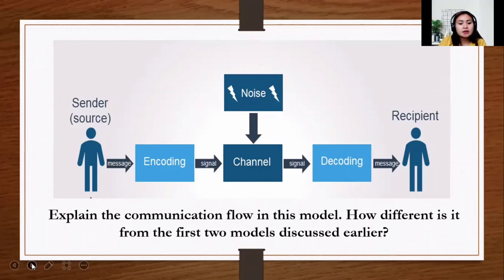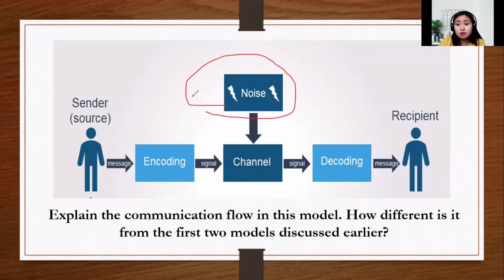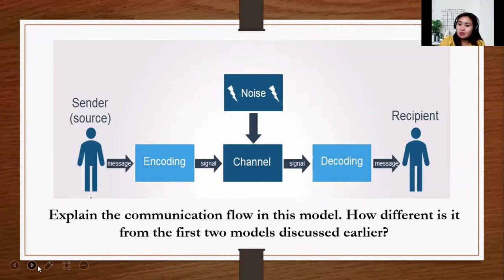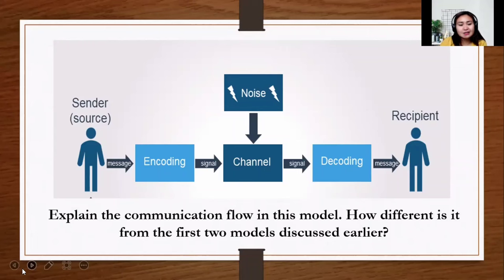How is Shannon Weaver's model different from the first two? Well, there is the addition of noise or distraction, which is very true. We really could not transmit a message 100% all the time because along the way there is distraction. Sometimes distraction can happen externally, sometimes internally — for example, it seems you're listening but inside you're thinking about something else. That is also considered noise.